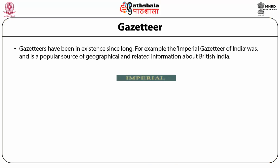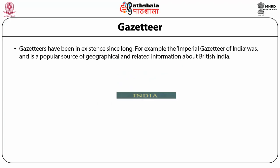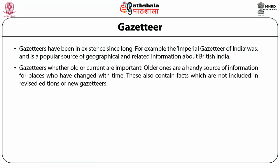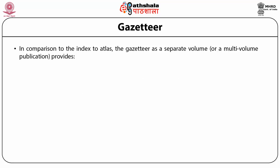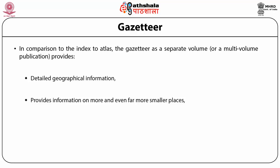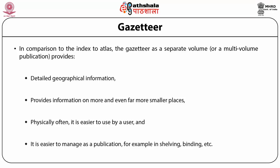Gazetteers have been in existence for a long time. The Imperial Gazetteer of India was and remains a popular source of geographical and related information about British India. Gazetteers, whether old or current, are important. Older ones are a handy source of information for places which have changed over time, and they contain facts not included in revised editions or new gazetteers. The term gazetteer has been used in two senses: as the index to an atlas, and as an independent publication. As a separate volume or multi-volume publication, a gazetteer provides more detailed geographical information and covers more — even far smaller — places, and is physically easier for users to use and manage.